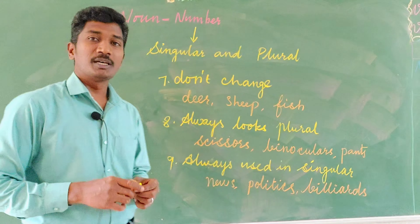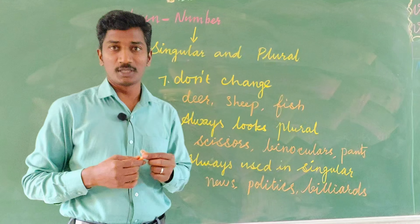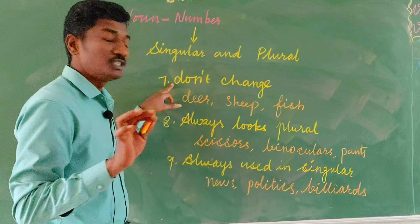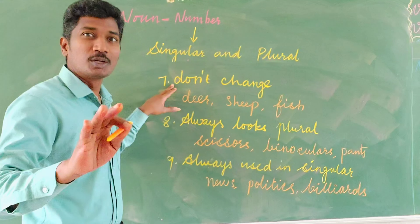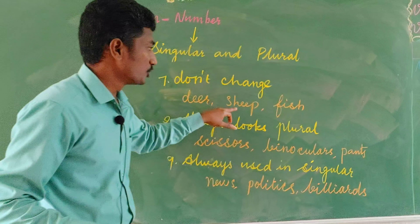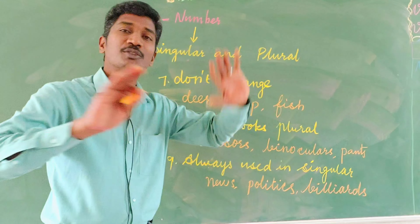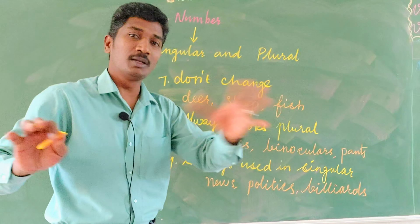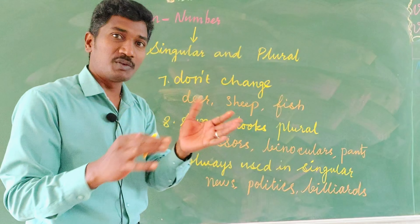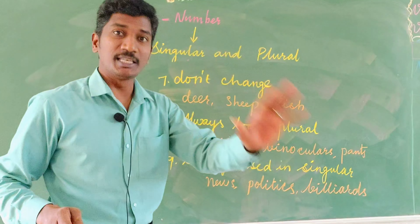Here are some peculiar singular and plural rules. You see — do not change: they remain always singular and plural the same. Deer, sheep, fish — they do not change, always remain singular or plural. They are used according to the context, but they remain the same.